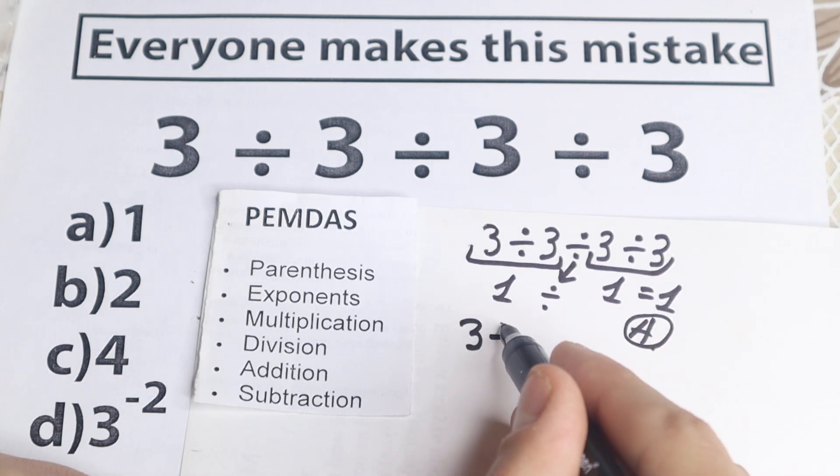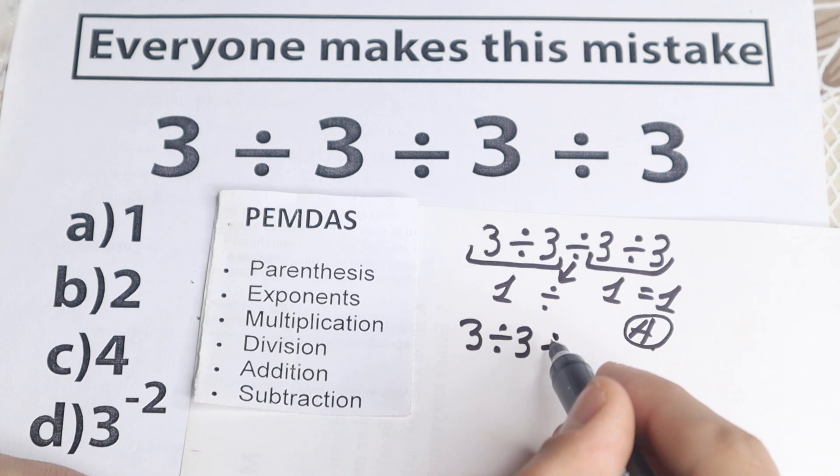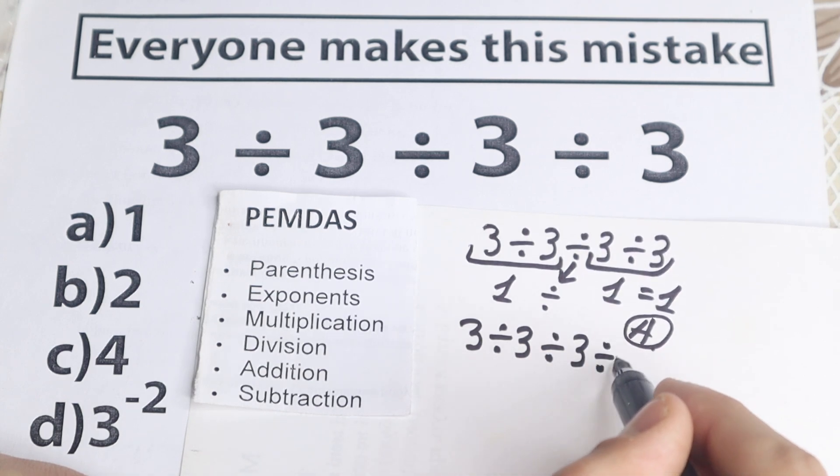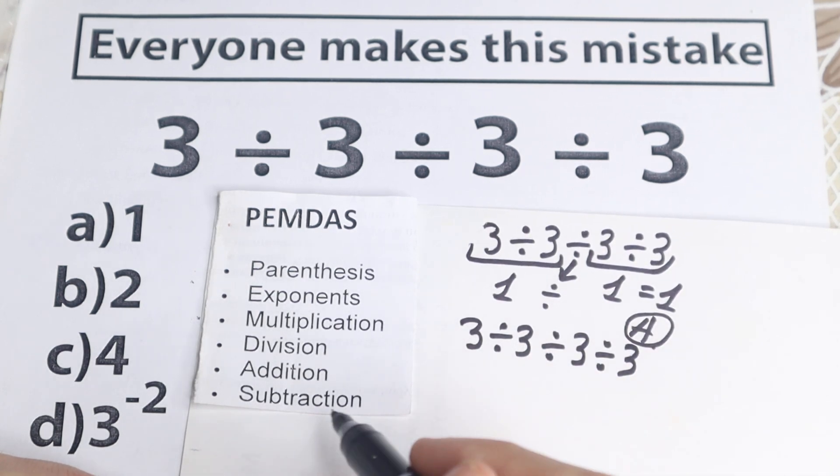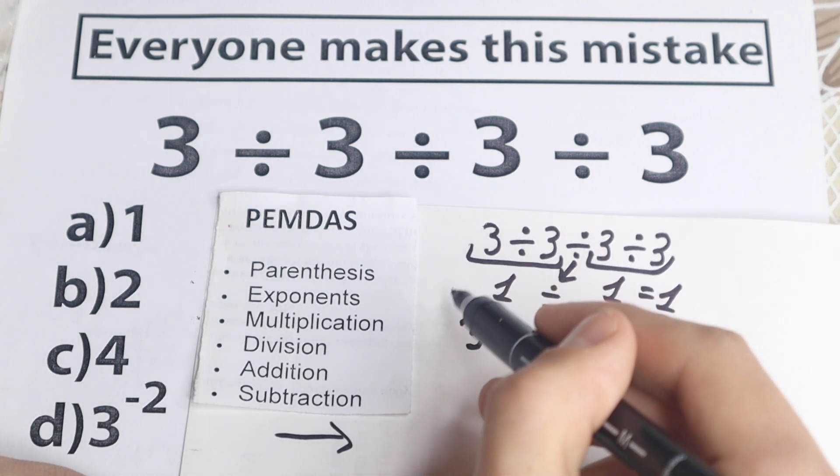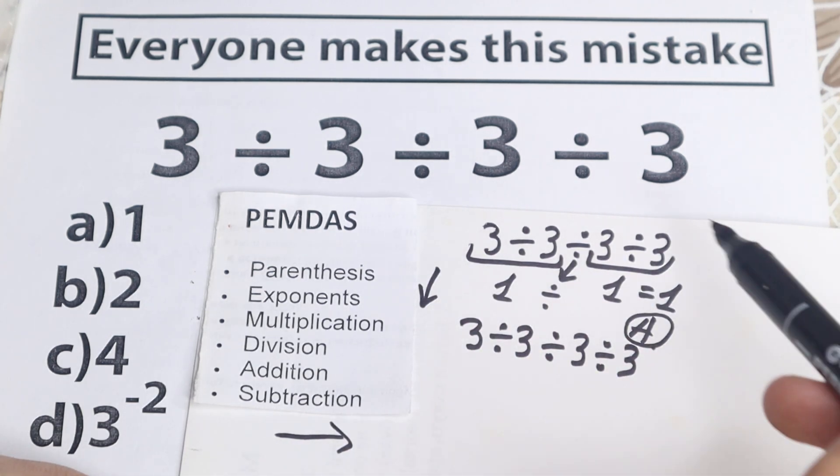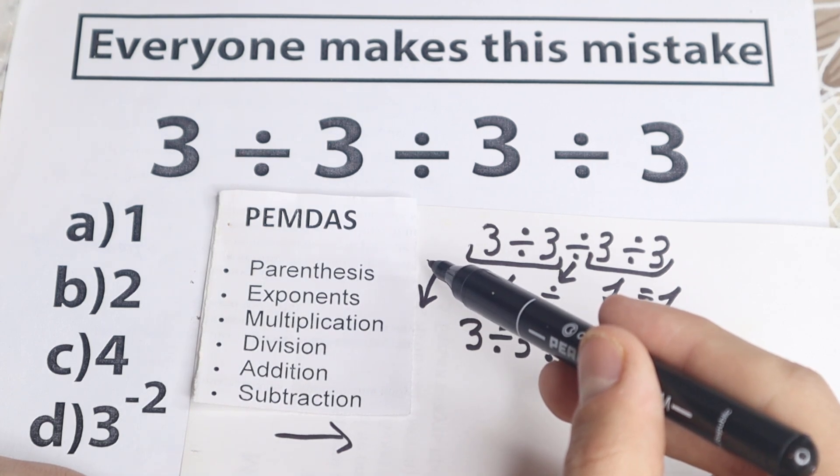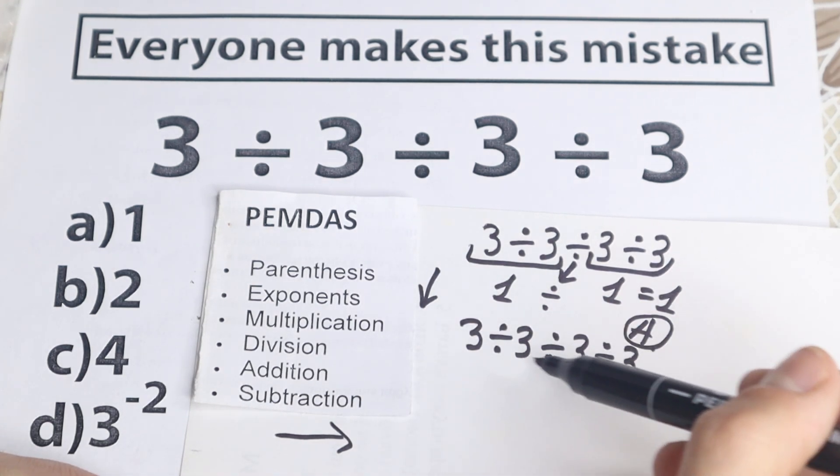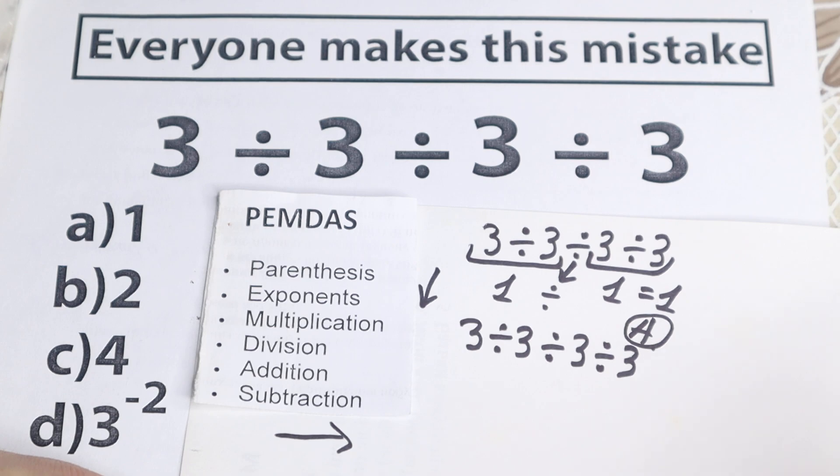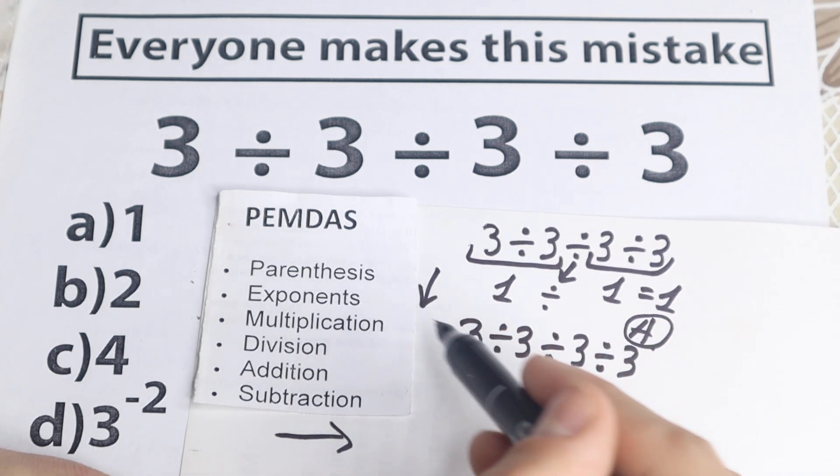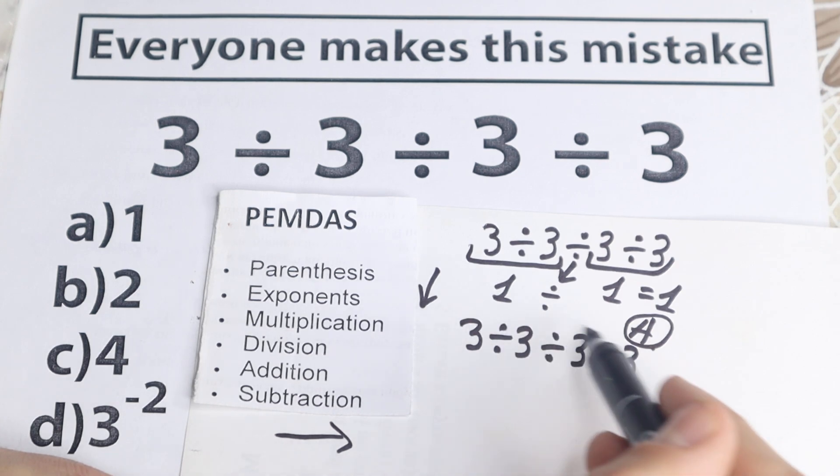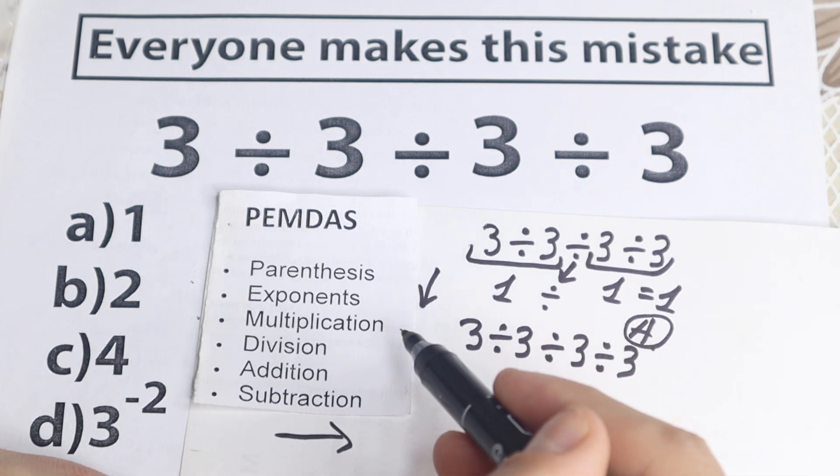So we have 3 divided by 3, divided by 3, and divided by 3. According to PEMDAS we need to go from left to right. If you're talking about order of operation, the first step is parentheses. So are there any parentheses right here? No, I don't see any of those. I don't see any parentheses. So we skip this part. Exponents. I don't see any exponents right here, no squares, no cubes, only 3.